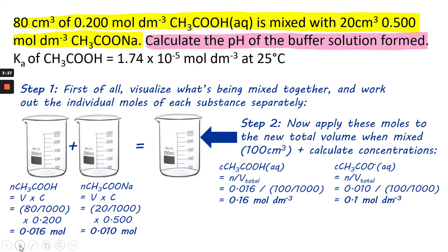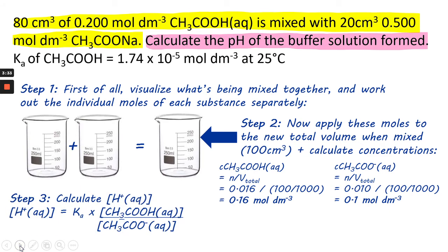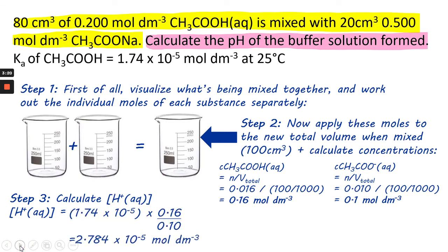The next thing to do is to calculate the pH of the buffer solution formed. So, we need to use the buffer pH calculation. To do this, you've got to make H plus the subject. So, it's Ka times the ethanoic acid concentration over the sodium ethanoate concentration. Putting the numbers in, you get 2.784 times 10 to the minus 5 as your hydrogen ion concentration.